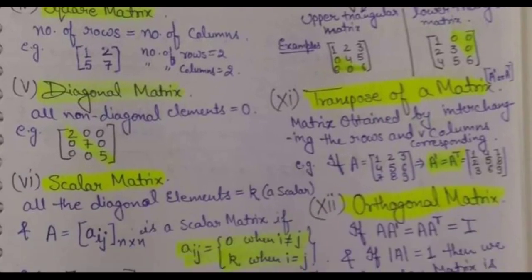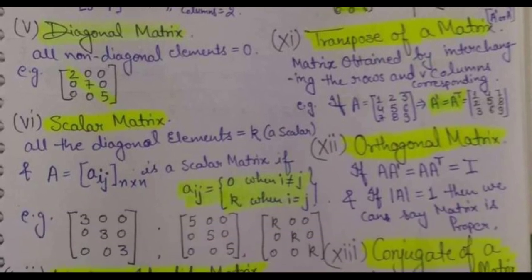Next is the transpose of a matrix. To find the transpose of a matrix, we change or convert the rows into columns and columns into rows — that is, we interchange rows into columns or vice versa. That is how you will be able to get the transpose of any matrix, as shown in the example here.